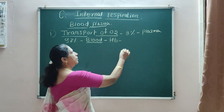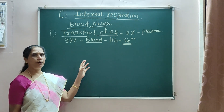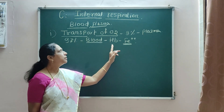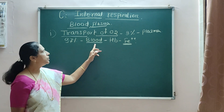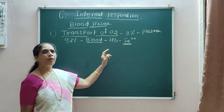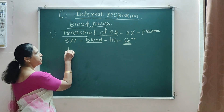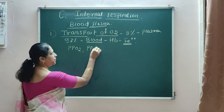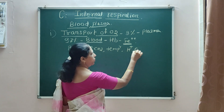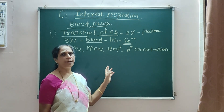Hemoglobin contains four iron molecules, and these four iron molecules have an affinity to combine with oxygen to form oxyhemoglobin. Hence hemoglobin acts as a respiratory pigment. The formation of oxyhemoglobin is related to partial pressure of O2, partial pressure of CO2, temperature, and H+ concentration — these are the four factors essential for formation of oxyhemoglobin.